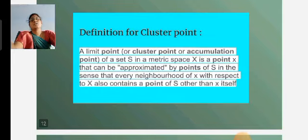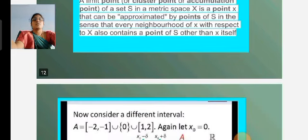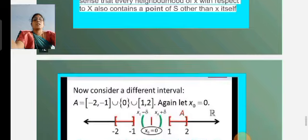Definition for cluster point: A limit point or cluster point or accumulation point of a set S in a metric space X is a point x that can be approximated by points of S, in the sense that every neighborhood of x with respect to X also contains a point of S other than x itself.